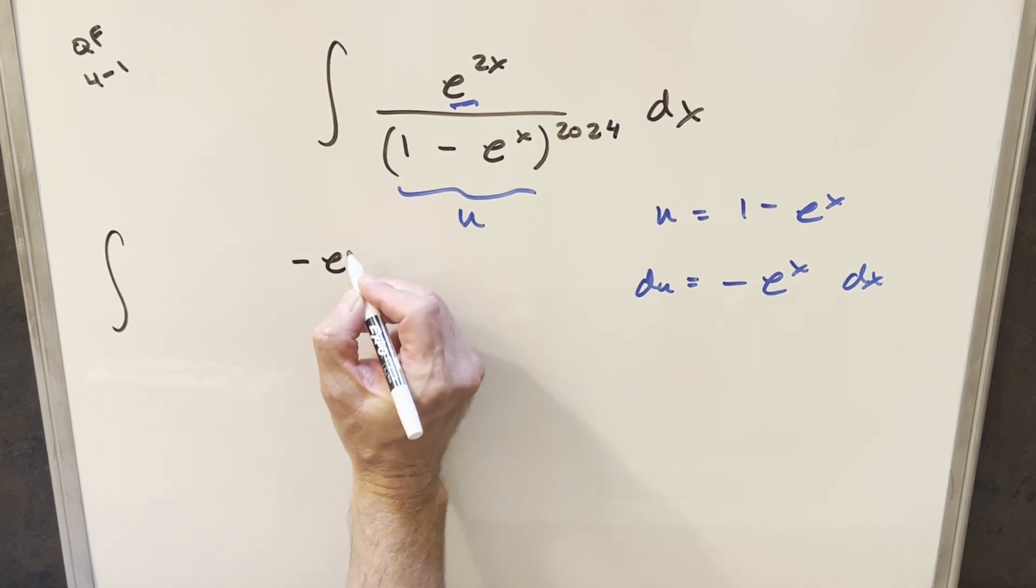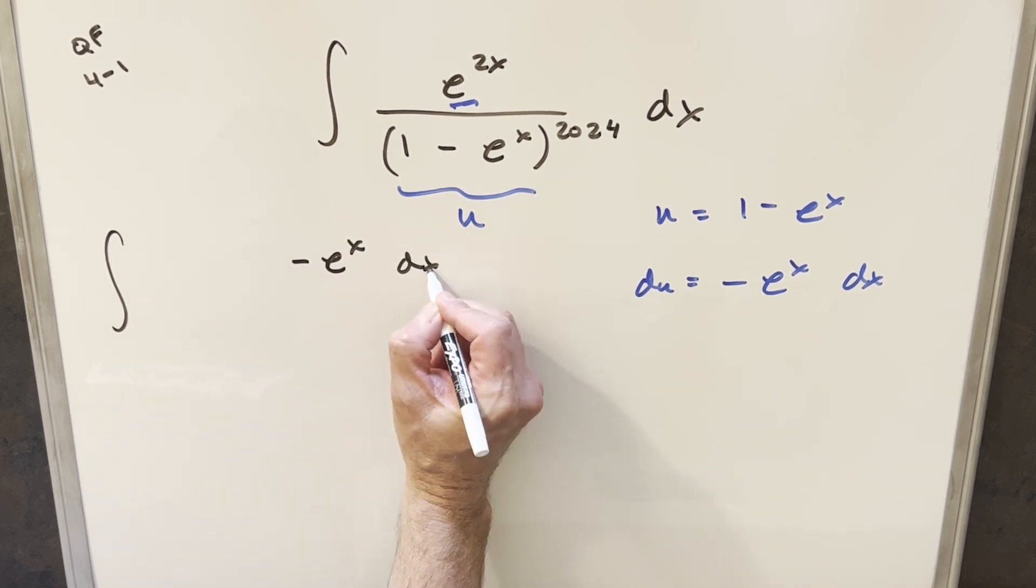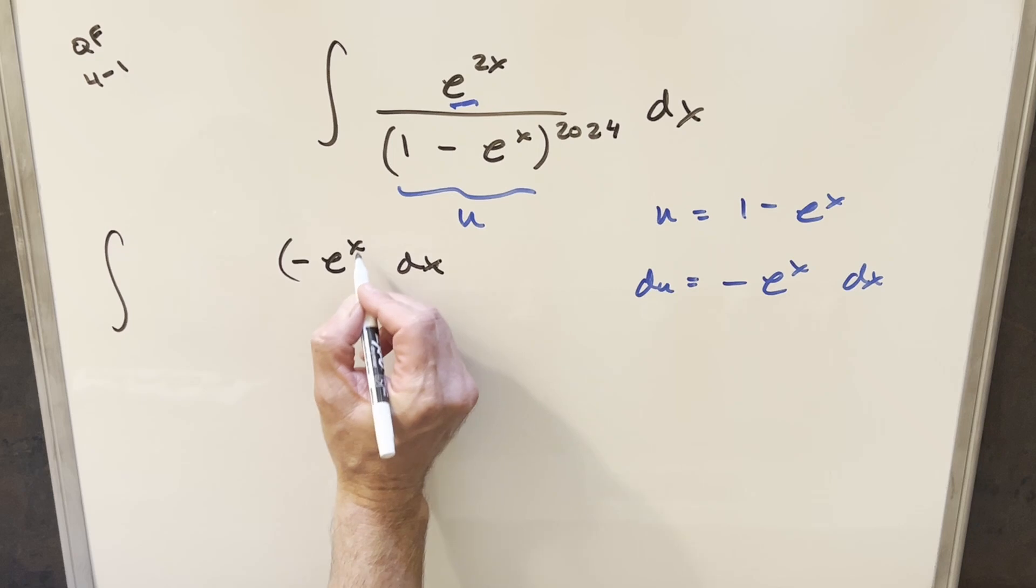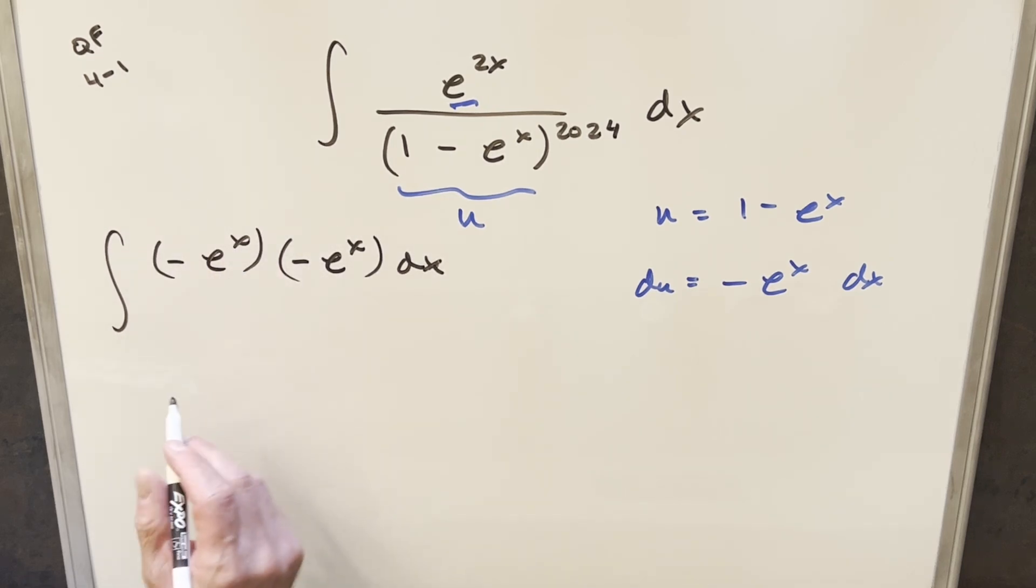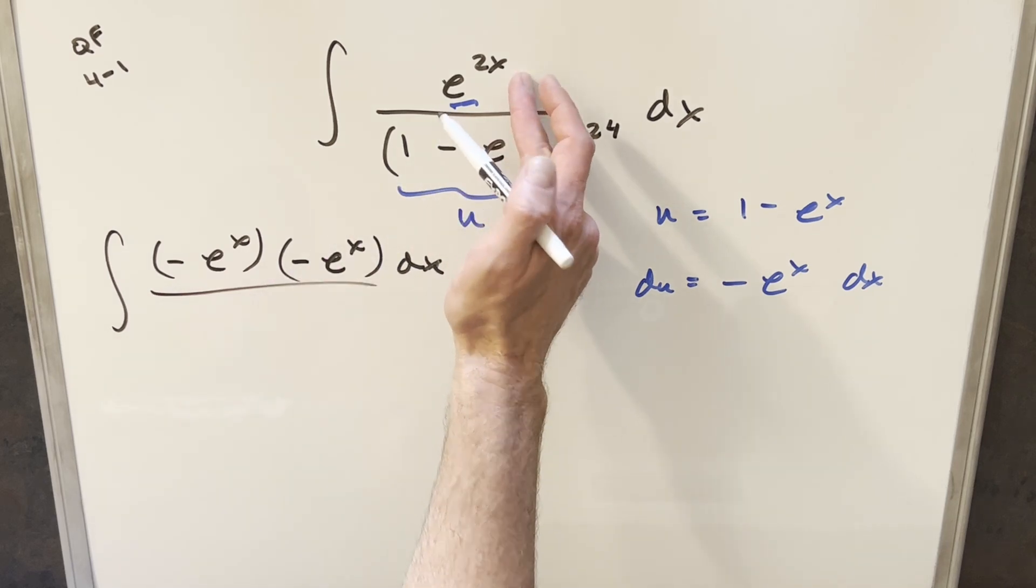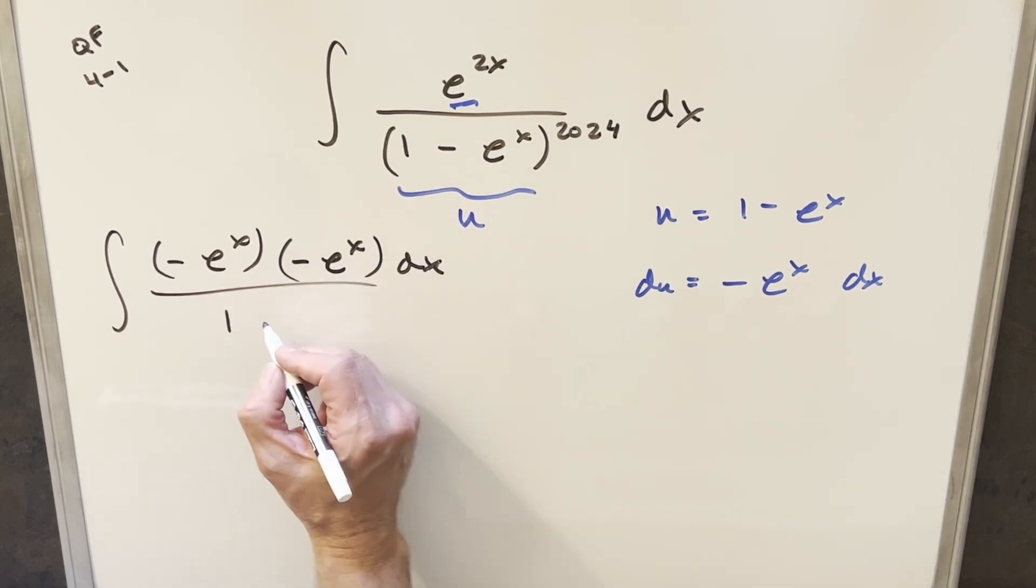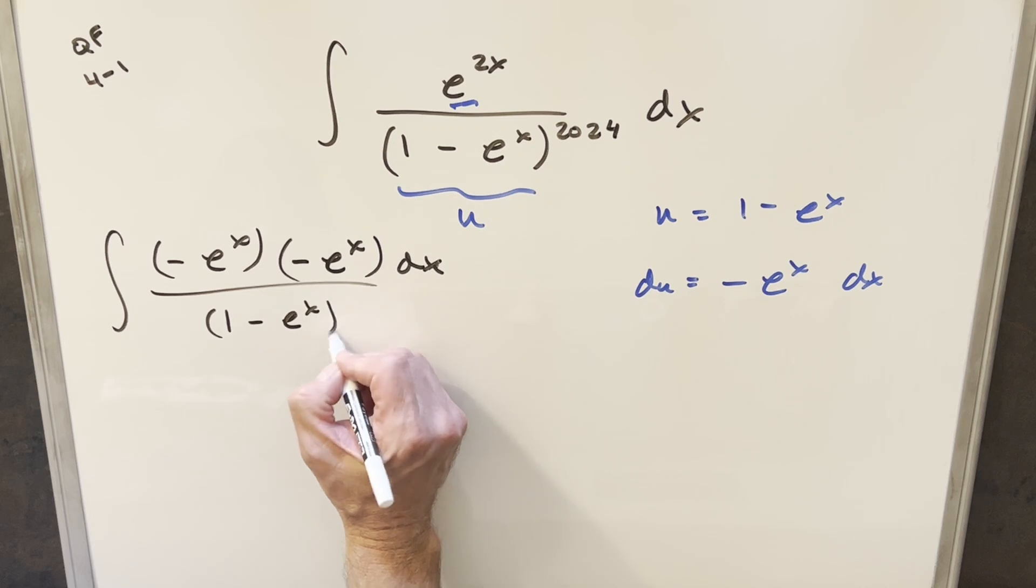I'm going to create this minus e to the x dx so that we have our du, but so that I'm not changing it, I'll multiply by minus e to the x. Just noticing that when you multiply these two together, the minuses cancel, and we get back e to the 2x. And then we'll just keep this denominator just the way it is right here.